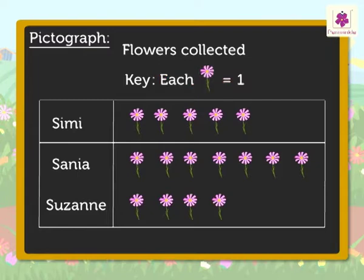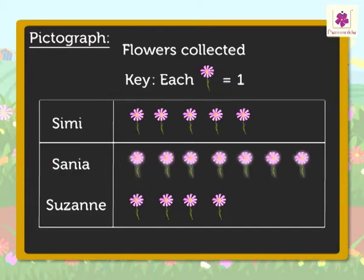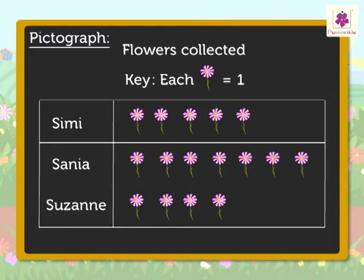Hence, from the PICTOGRAPH we can say, Simi collected five flowers, Sania collected seven flowers, and Suzanne collected four flowers.